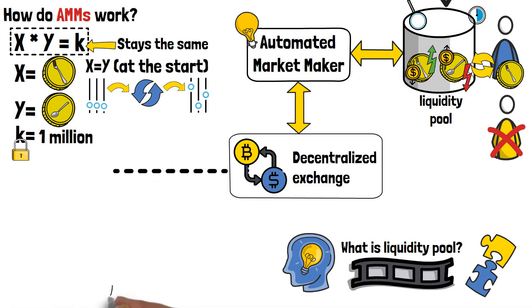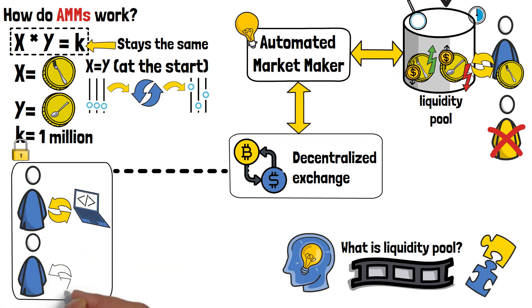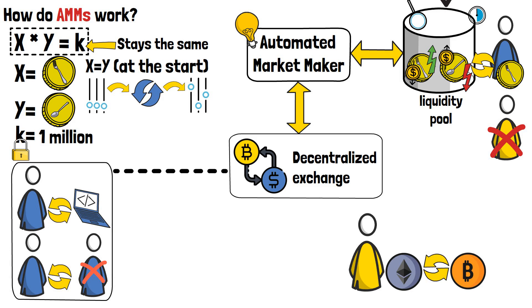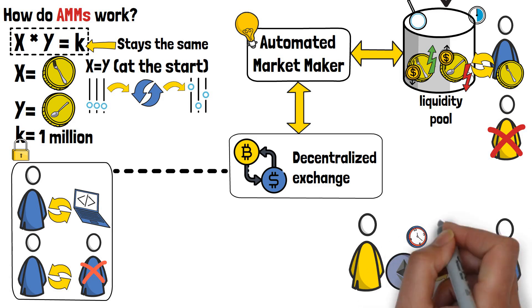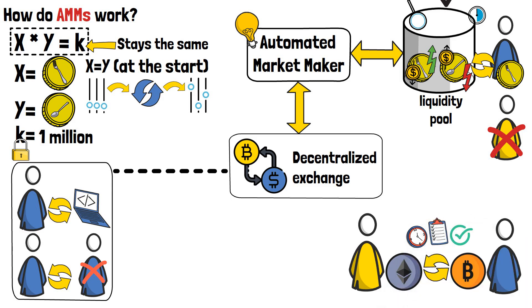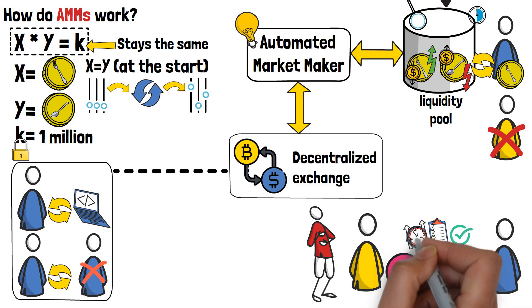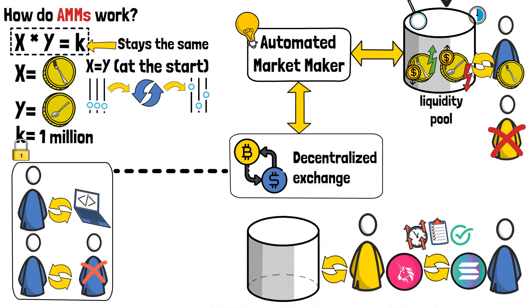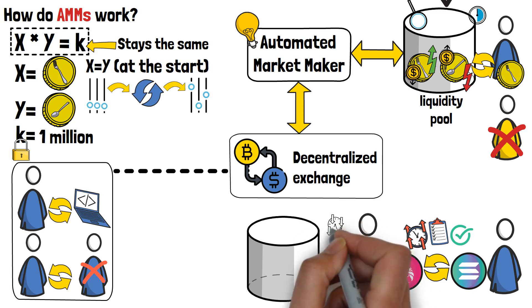Basically, at decentralized exchanges, you as a person will trade with a machine, not with a human. Imagine you want to trade your Ethereum coins for some Bitcoin. Doing it the old-fashioned way, you would need to wait for someone who would want to trade their BTC for ETH, and if all parameters of the trade match, you'd be able to perform that trade. There are plenty of far less known crypto assets out there, meaning you could be waiting for someone to match your trade for a long time. Not an issue with automated market makers — with these tools on decentralized exchanges, you can perform your trades instantly.